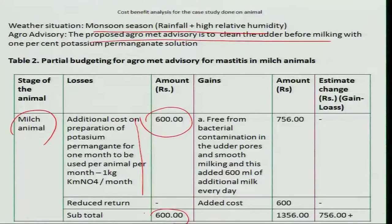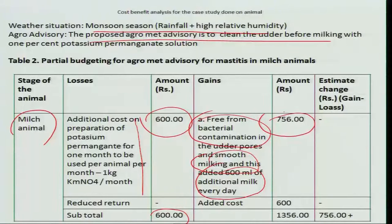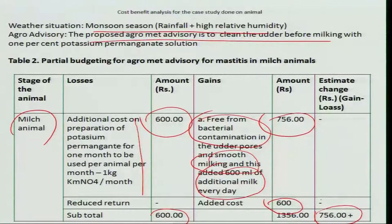Here, for the milking animal, the additional cost on preparation of potassium permanganate solution — 1 kg per animal per month — costs about 600 rupees. The benefit obtained is being free from bacterial contamination, smooth milking, and 600 ml of extra milk every day, which comes to 756 rupees. Your additional cost is 600 rupees, so you get a total of 1356 rupees and a net benefit of 756 rupees per animal. This is also a good example from the case studies examined through ex-ante analysis.